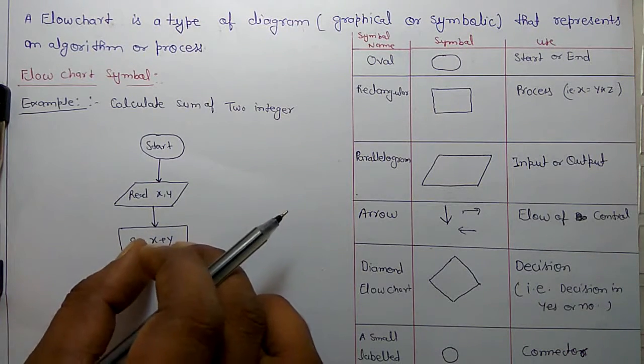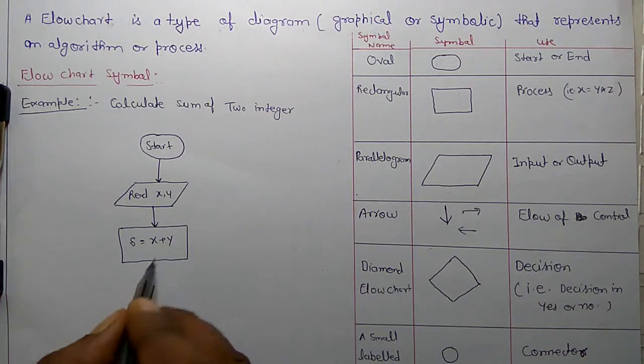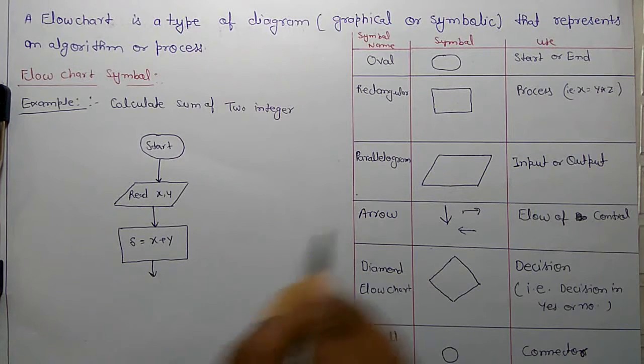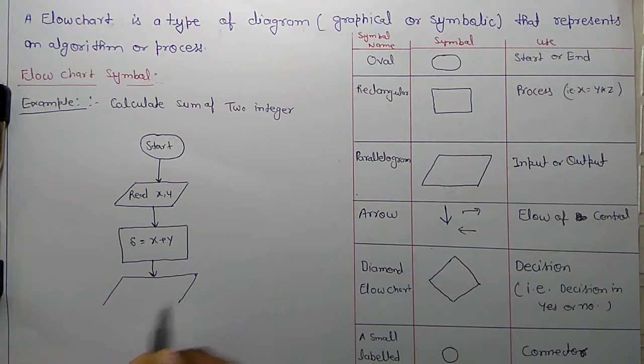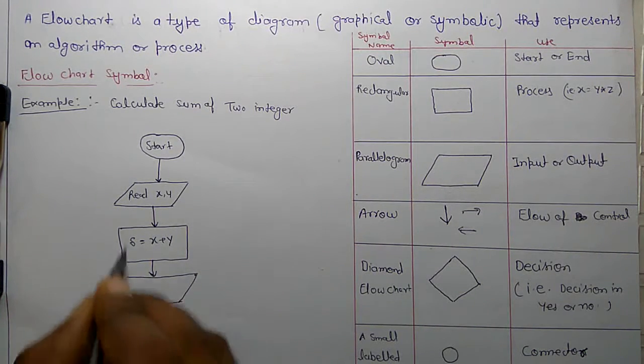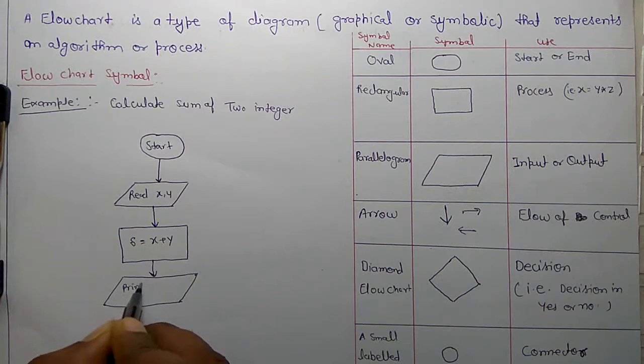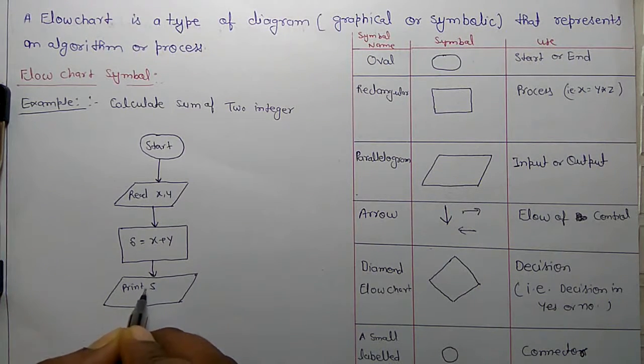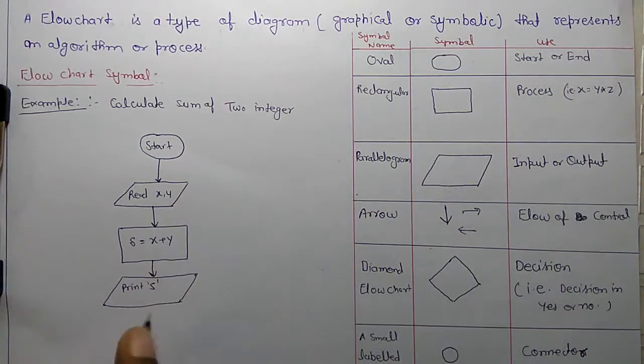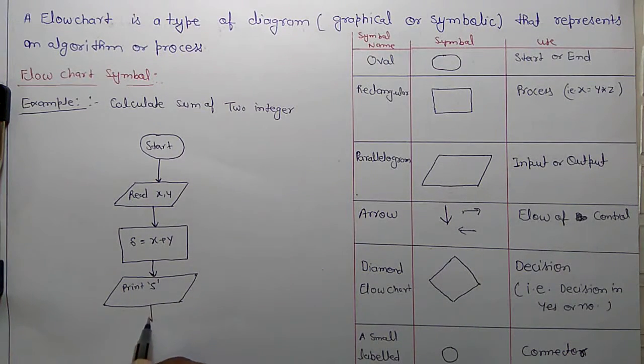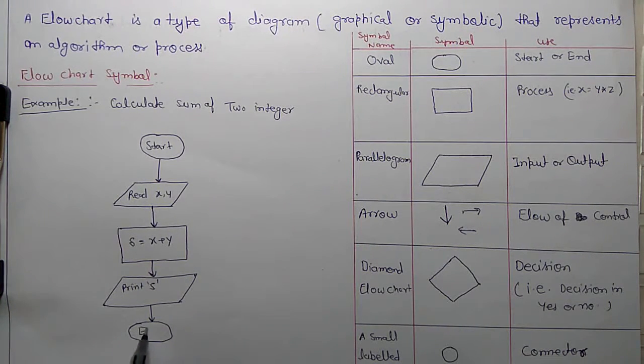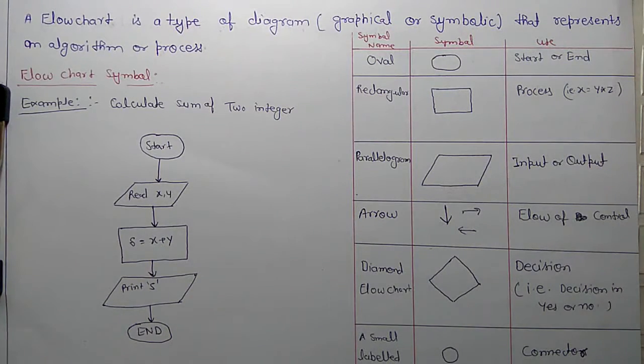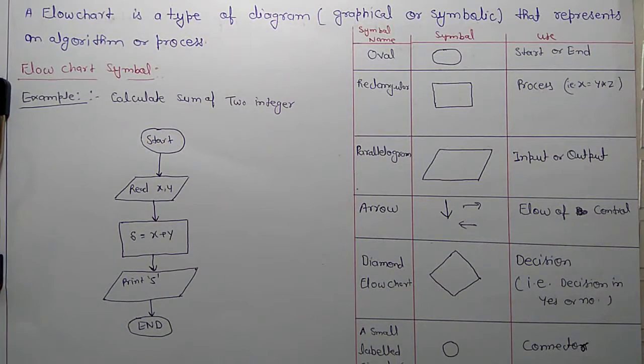I have calculated sum. So now print it. For printing, again this parallelogram, because parallelogram is used for input and output. So print s. Now the process is end. Through this step you have calculated the sum. In the last, end symbol, again oval, end. So this is the flowchart to calculate sum of two integers.